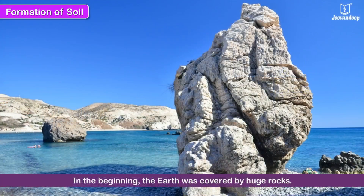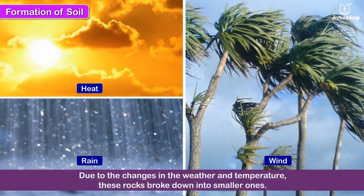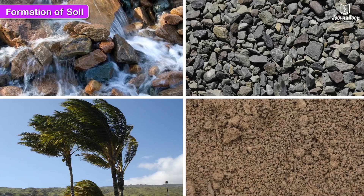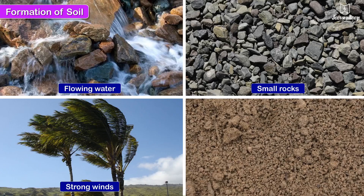In the beginning, the earth was covered by huge rocks. Due to the changes in the weather and temperature, these rocks broke down into smaller ones. They were then carried by flowing water and strong winds, which further broke them into even smaller pieces until they became tiny particles of soil or sand.